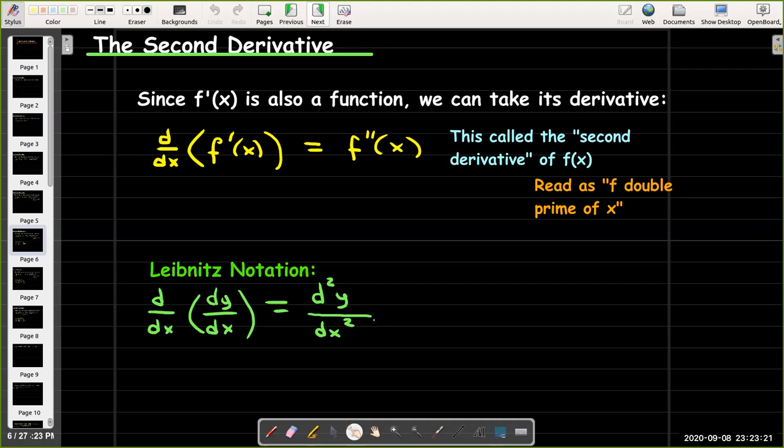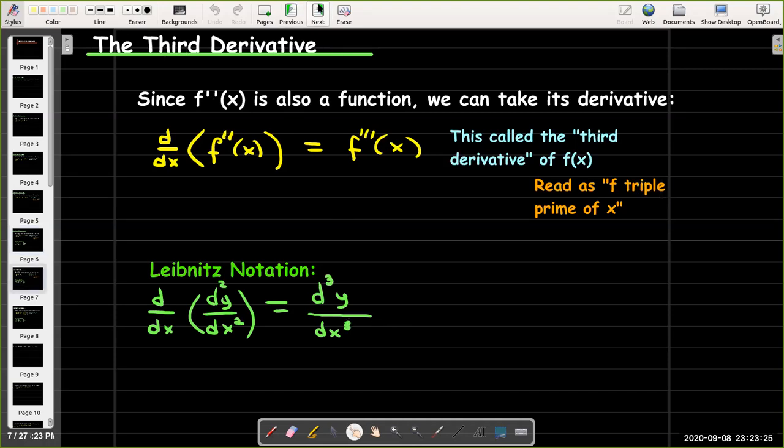Normally we avoid Leibniz notation for higher order derivatives as it's a bit awkward. But we could take the derivative of the second derivative to get the third derivative. That would be f'''(x) or f triple prime of x. In Leibniz notation, we'd have d³y/dx³.